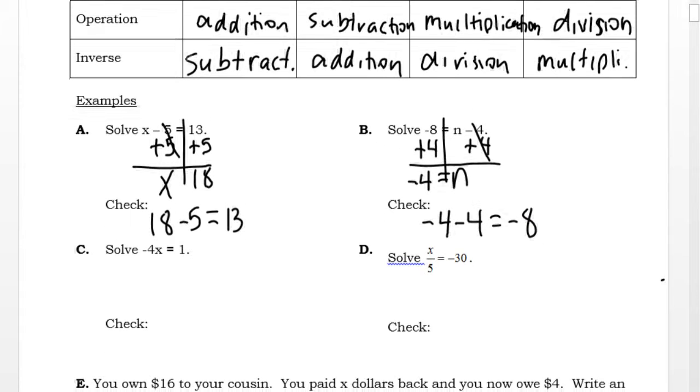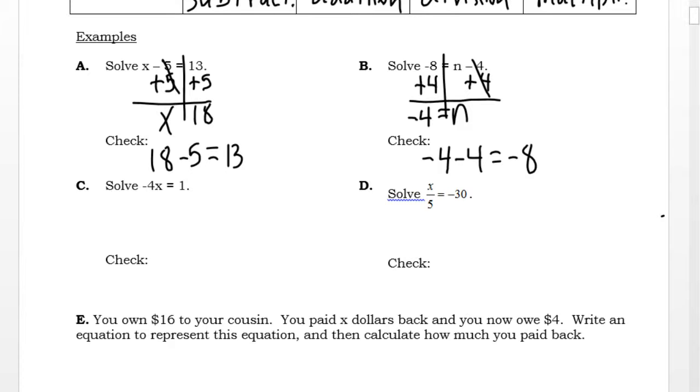Example C has the equation negative 4x equals 1. Negative 4 right next to x implies multiplication. So to undo a multiplication, we use division. I'm going to divide both sides of the equation by negative 4. And then x is negative. We can leave it in fraction form, 1 fourth.